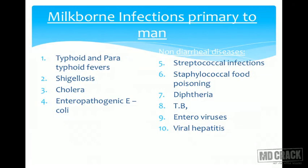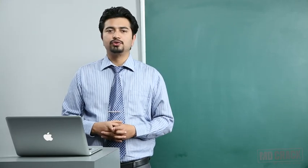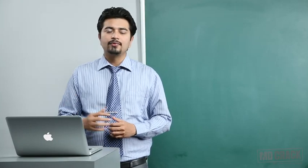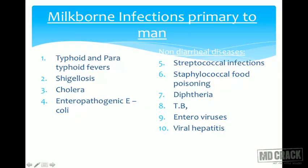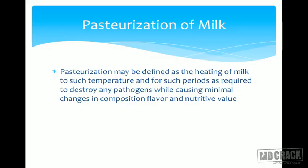Milk-borne infections are an important topic with many potential exam questions. Direct infections transmitted to man through milk include typhoid and paratyphoid, shigellosis, cholera, and enteropathogenic E. coli — these are diarrheal diseases caused by milk. Non-diarrheal diseases from milk include streptococcal infections, staphylococcal food poisoning, diphtheria, tuberculosis, enterovirus, and viral hepatitis. Therefore, protection is needed against these diseases, afforded by pasteurization of milk.